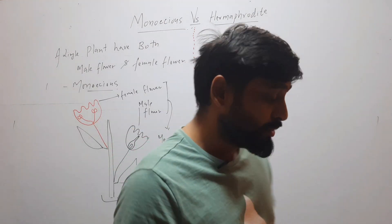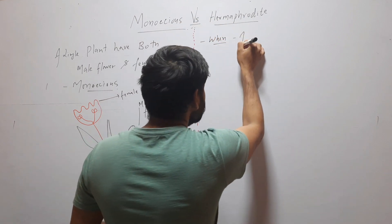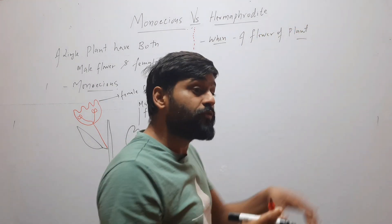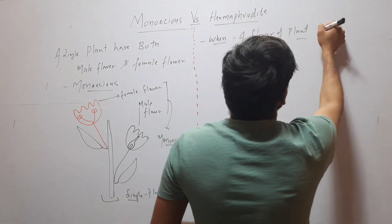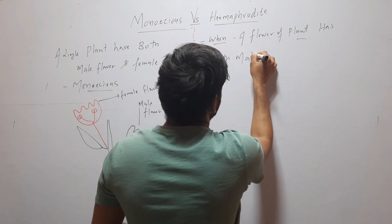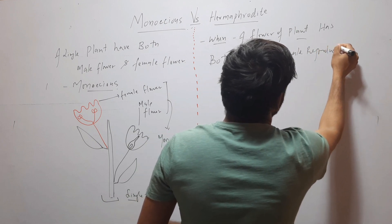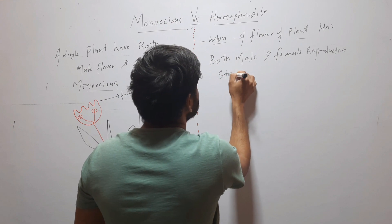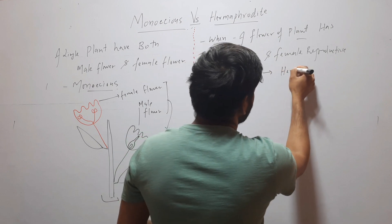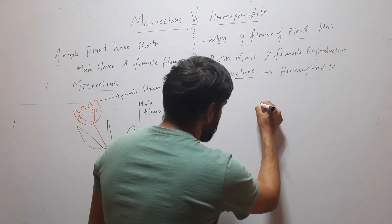But when a flower of a plant has both male and female reproductive structures or female reproductive organs, then this plant will be called hermaphrodite.